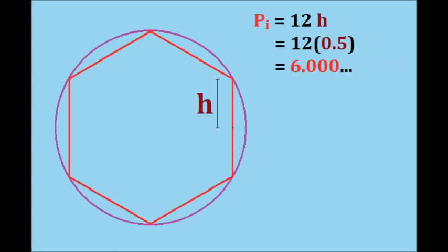Since we have six sides on a hexagon, the total perimeter is 12 times that value h we just found. 12 times 0.5 is equal to six, exactly. We have just found the inner perimeter, so how do we convert this to pi?